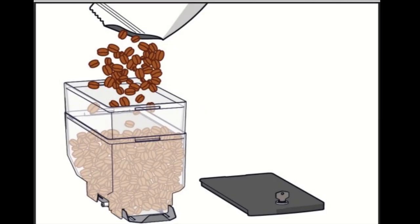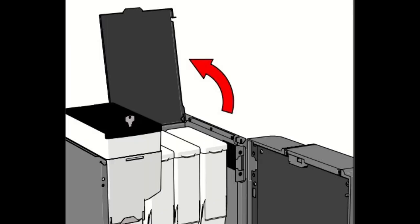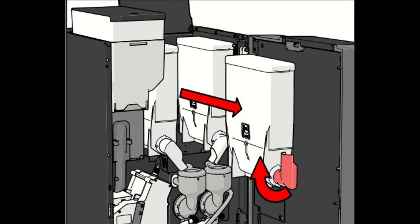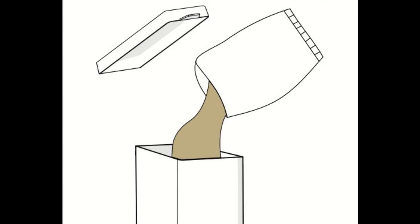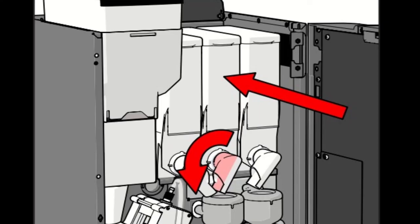To refill instant canisters, open the top cover. Turn the spouts of the instant product canisters upward and remove the product canister from the machine. Fill the canisters to maximum three-quarters of the capacity. Replace the canisters in the machine and turn the spout downward.